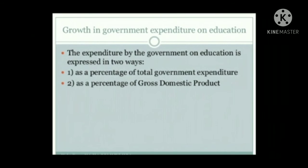Growth in government expenditure on education: government expenditure on education is expressed in two ways. First, as a percentage of total government expenditure — this indicates the importance of education in the government's scheme of things; during 1952 to 2014, it increased from 7.92% to 15.7%. Second, as a percentage of GDP — this expresses the proportion of income spent on development of education; during 1952 to 2014, it increased from 0.64% to 4.13%. The increase has not been uniform, with irregular rise and fall. However, if we include private expenditure by individuals and philanthropic institutions, the total education expenditure would be much higher.